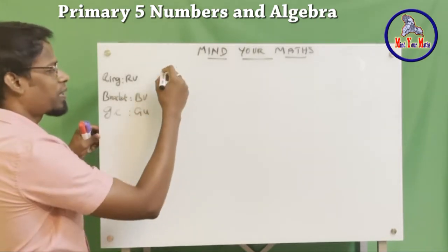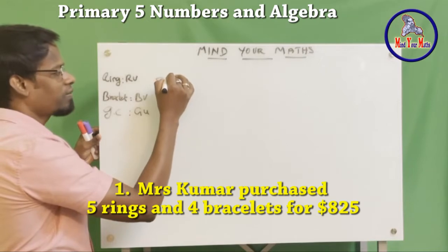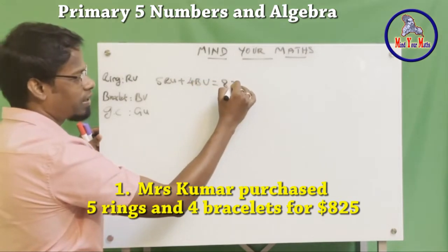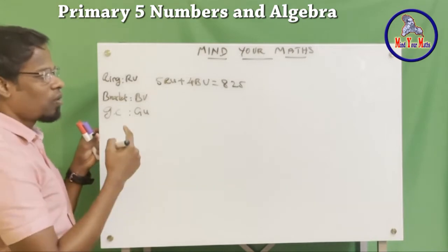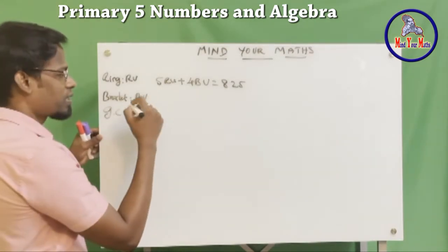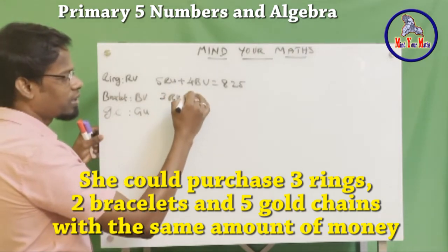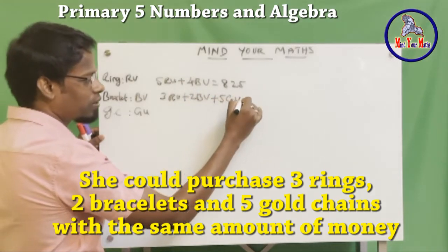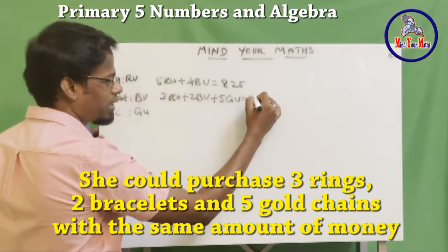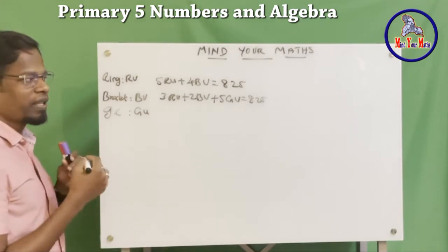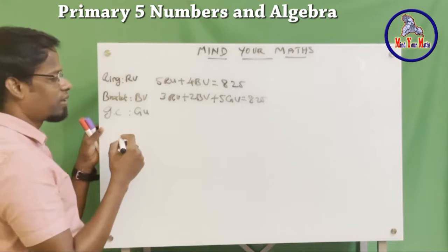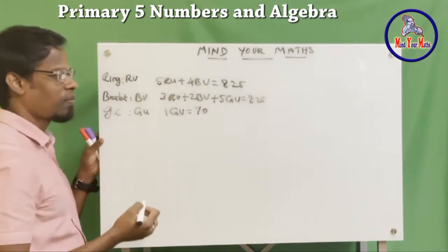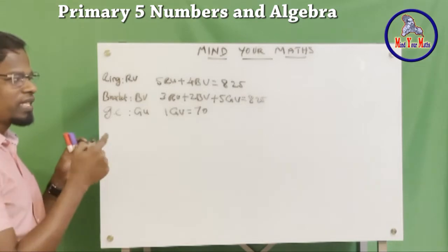What is given in the problem: she purchased five ring units plus four bracelet units for $825. What she could also have done is purchase three ring units plus two bracelet units plus five gold chain units for the same price — $825. Also, the price given is that one gold unit equals $70.